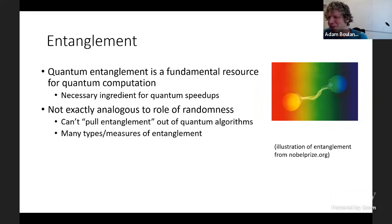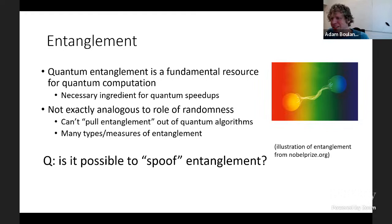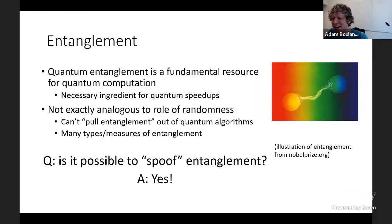The role of entanglement in quantum computing is not exactly analogous to the role of randomness in classical computing, because quantum entanglement is in some ways more rich and subtle. For example, we don't know a way to pull the entanglement out of a quantum algorithm in the same way we can pull randomness out of a classical algorithm. And there are many different types and measures of entanglement one can consider.